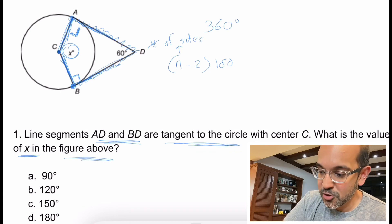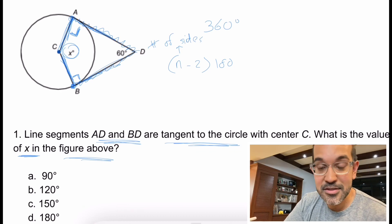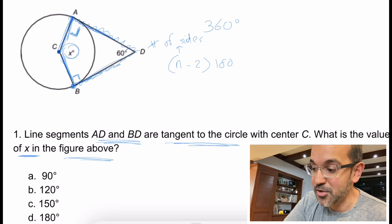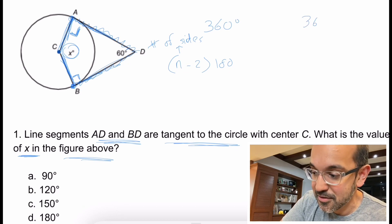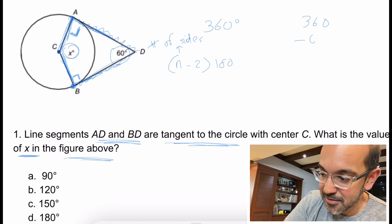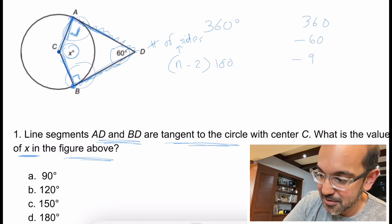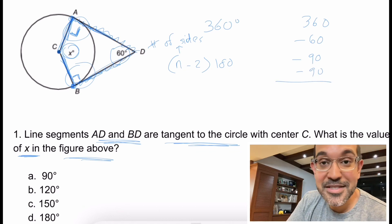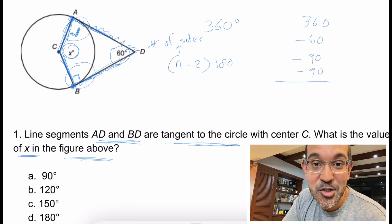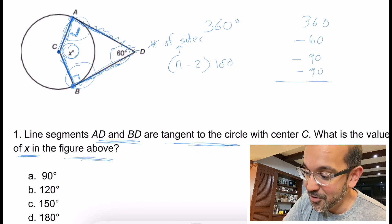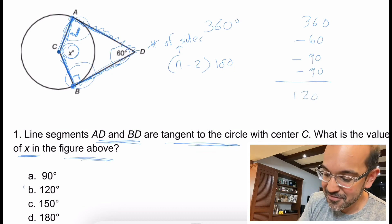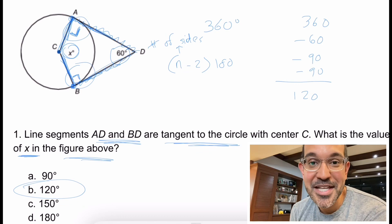360 minus 60, minus 90, minus 90. And what do we get there? 360 minus 60 is 300. 300 minus 180 is what? 120. And that's given to us in answer choice B, 120 degrees. That's all there is to it.